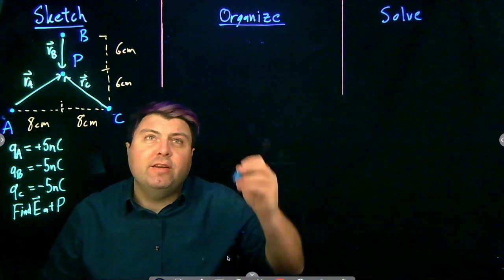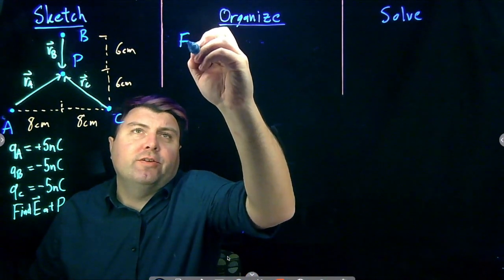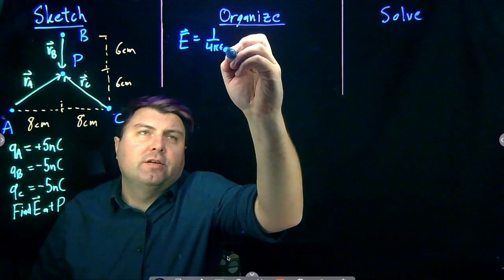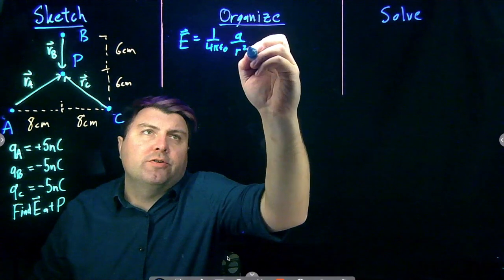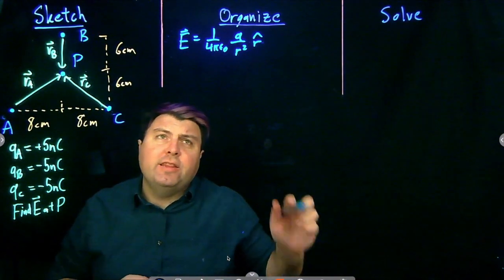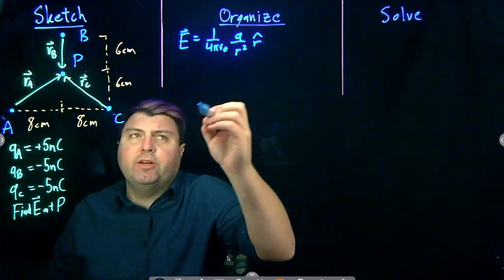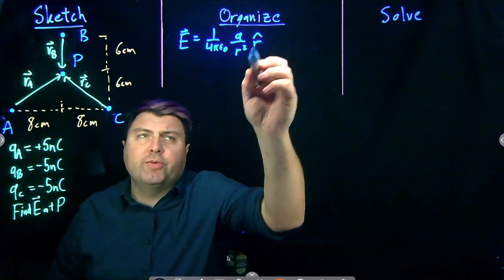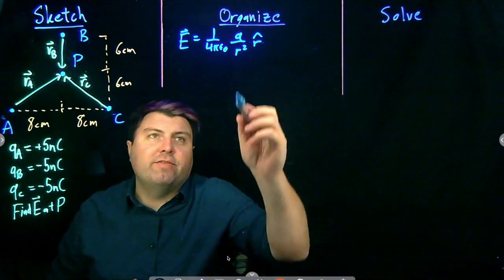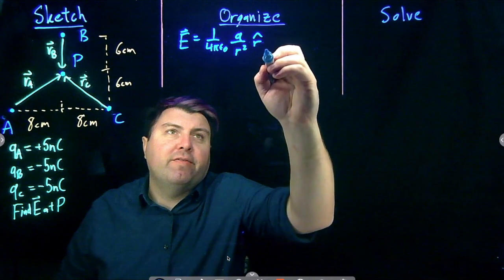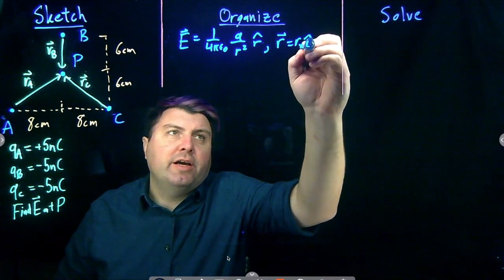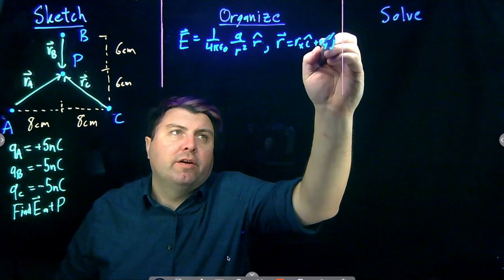In our organized step, we want to write out the electric field equation in a general sense: 1 over 4π epsilon-naught, times Q over R squared, times R-hat. For each charge, we need to find their charge, their R squared, and their R-hat. The charge we already have. R squared and R-hat we get by finding the R vector, which is R_x î plus R_y ĵ.